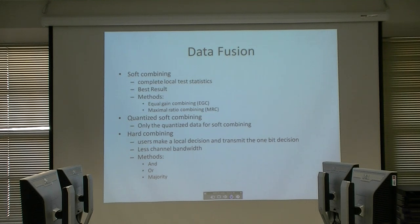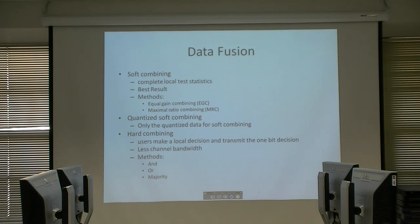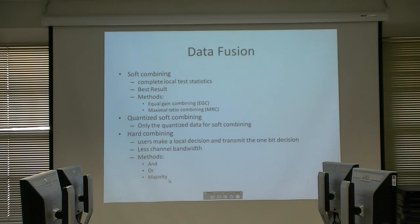Data fusion can be divided into three parts: soft combining, quantized soft combining, and hard combining. In soft combining, all local test data is sent to the fusion center, producing the best results. In quantized soft combining, the quantized data of each CR is combined. In hard combining, each user sends its local decision, and these decisions are merged based on rules such as AND, OR, or majority vote — for example, k-out-of-n. Hard combining requires the least channel bandwidth but produces coarser results.